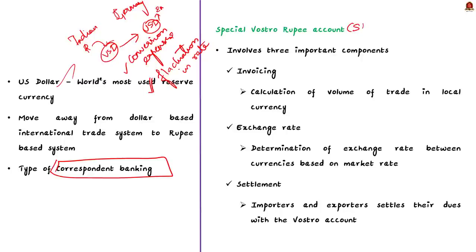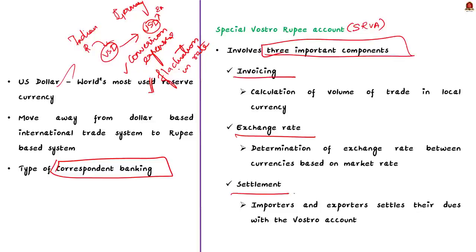Freely convertible currency refers to the currency which can be easily and fully converted into any major currency, with restrictions for conversion done away with. This new framework comprises three important components: invoicing, exchange rate, and settlement. In the invoicing stage, all invoices involving the foreign and domestic country are converted and calculated in local currency terms — in India's case, in Indian rupees.